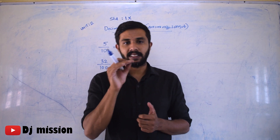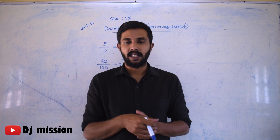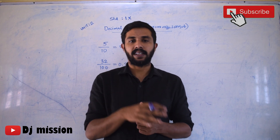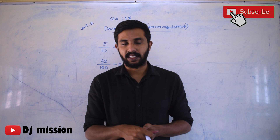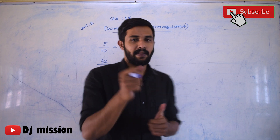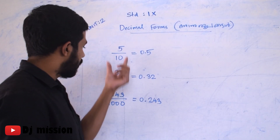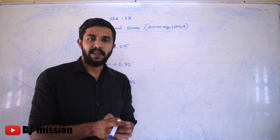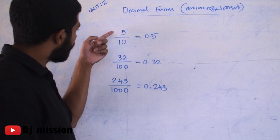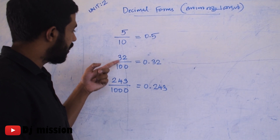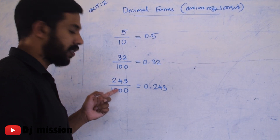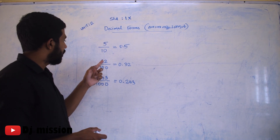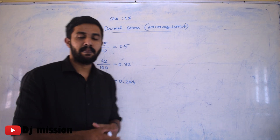We will study the Decimal Forms with Deshamsa Roopangal. We have to study the types of Decimal Forms — what is the name of the Decimal Forms? For example: 5 by 10, 32 by 100, 243 by 1000.